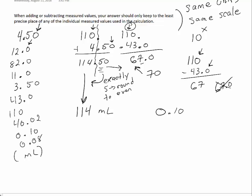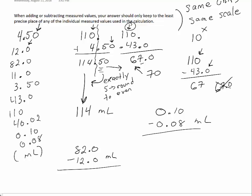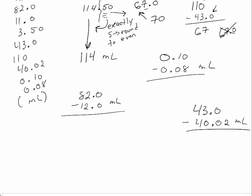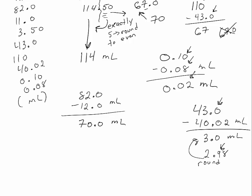What should your answer be for 0.10 minus 0.08 milliliters? What about 82.0 minus 12.0 milliliters? And 43.0 minus 40.02 milliliters? Go ahead and pause now. For 0.10 minus 0.08, both are precise to the hundredths place, so the difference of 0.02 stays as is. We're allowed to keep that 2 in the hundredths place — don't add extra zeros, and don't remove the 2.